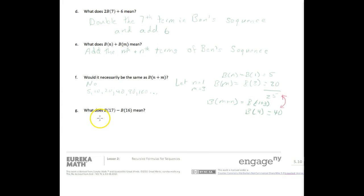And then finally, the last question. What does b(17) - b(16) mean? It means subtract the two terms. I hope you didn't think this was too bad. This page is a little easier than the first one.